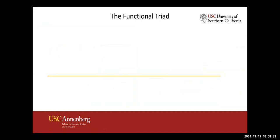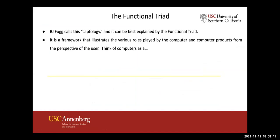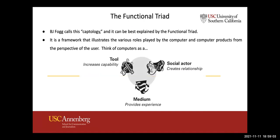Fogg talks about persuasive technology and the way it operates in terms of a functional triad — three bullets — and they encompass captology. Captology is the term Fogg uses for persuasive technology. This framework of a functional triad illustrates the different roles technology can play. Think about Facebook and the role it plays as a tool, as a social actor, and as a medium itself.